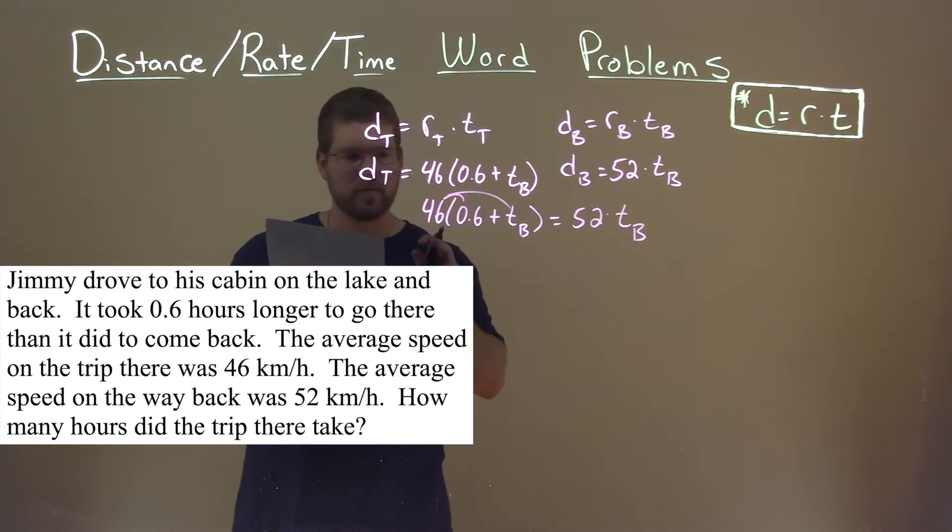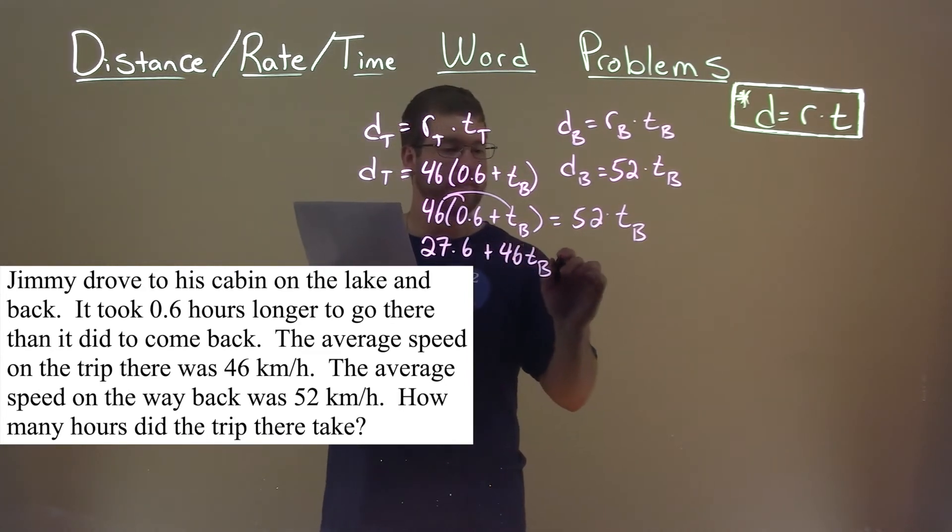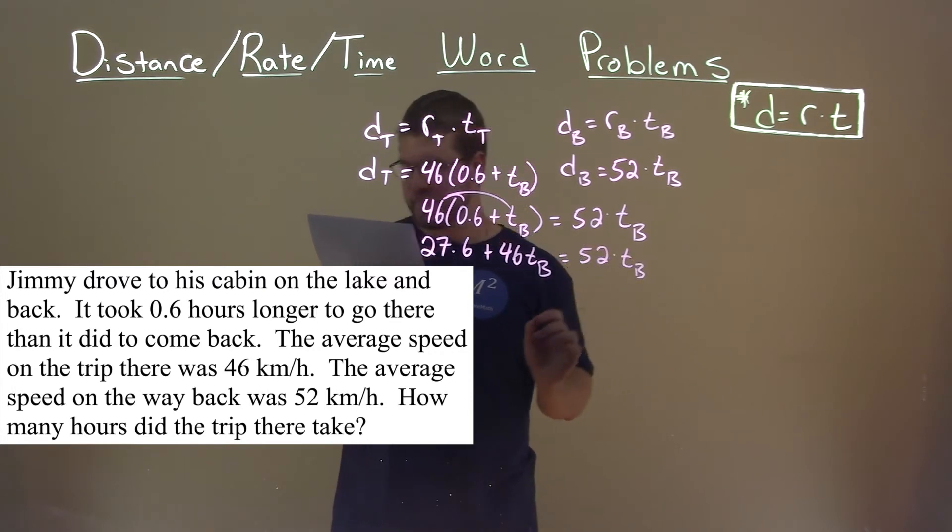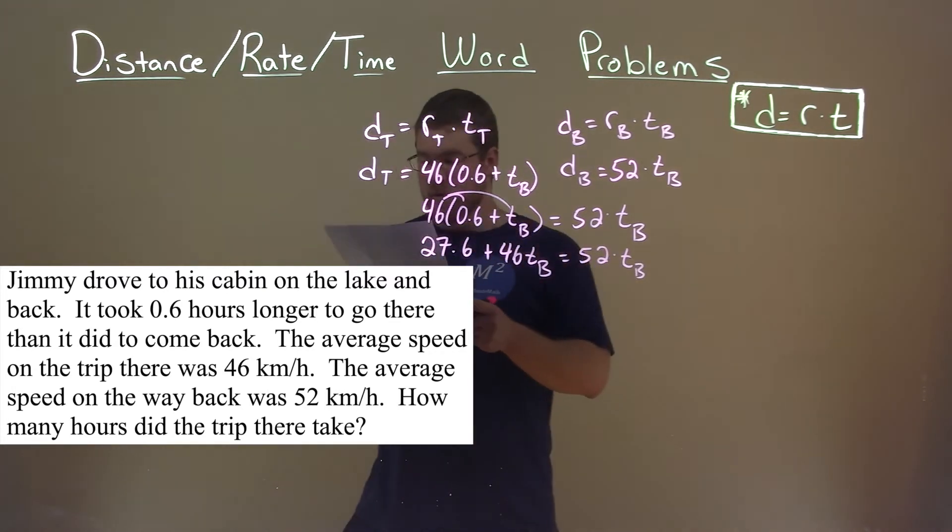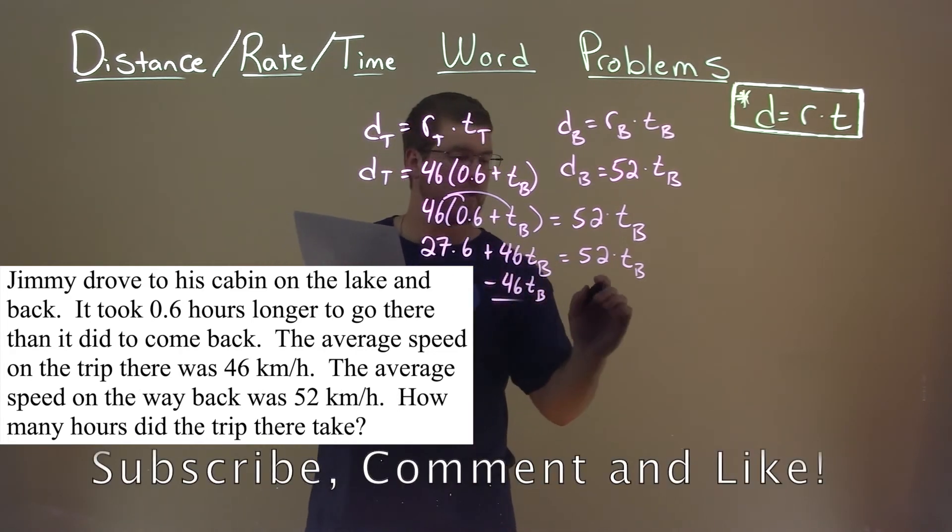Distribute the 46 across, and 46 times 0.6 is 27.6, plus 46 times T_B is just 46T_B, and that's equal to 52 times T_B. We can subtract the 46T_B to both sides to get our like terms together.